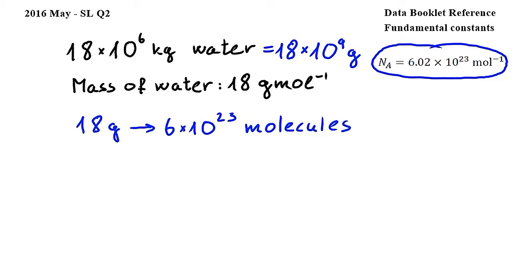From this, it follows that in 18 times 10 to the power of 9 grams of water, there are 10 to the power of 9 times 6 times 10 to the power of 23 molecules. Combining 10 to the power of 9 and 10 to the power of 23, we have to add the powers, which will give us 10 to the power of 32.